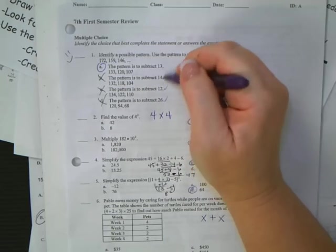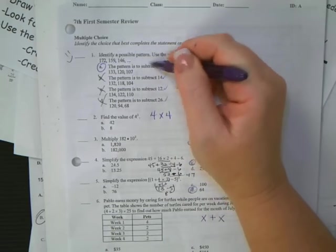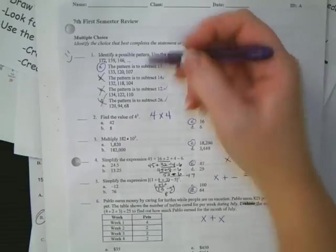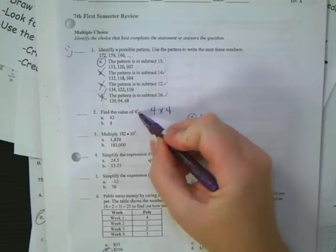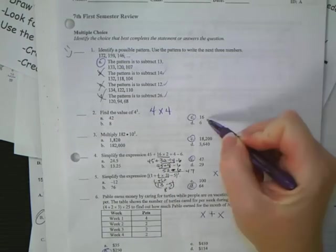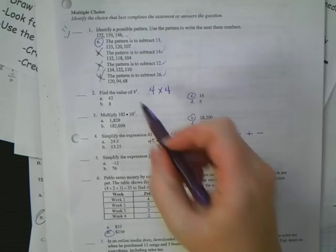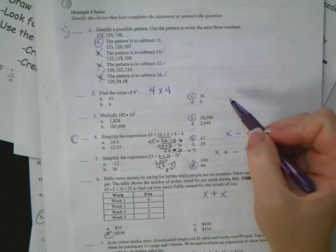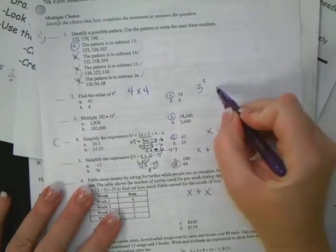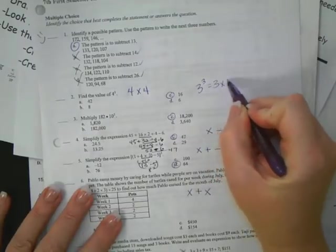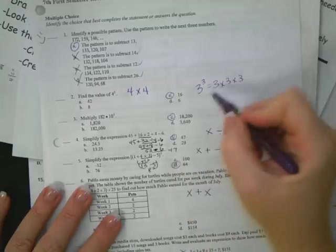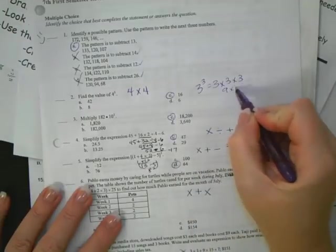Number two, exponents. It does not mean 4 times 2. It means 4 two times. 4 times 4 is 16. Please do not mess up on exponents. Another example would be 3 to the third power is the same as 3 times 3 times 3. It's not going to be 9. It's going to be 9 times 3, which is 27. So 3 to the third is 27, not 3 times 3 is 9. So please make sure you understand what exponents are.